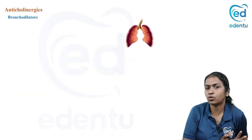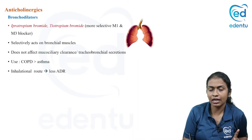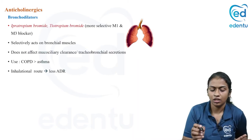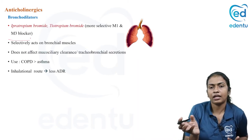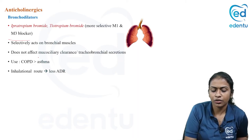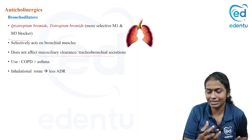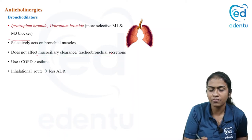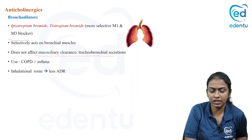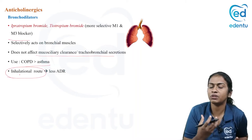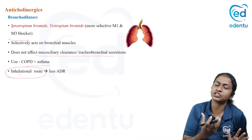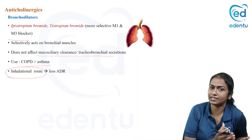Regarding bronchodilators: ipratropium and tiotropium act on M3 receptors to cause bronchodilation without much affecting mucociliary clearance or tracheobronchial secretions. They have more use in COPD than in asthma. They are administered by inhalation route because they directly reach the site of action, requiring less dose and producing fewer side effects.